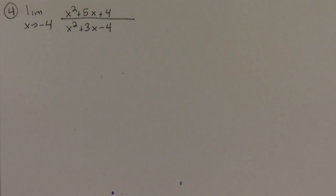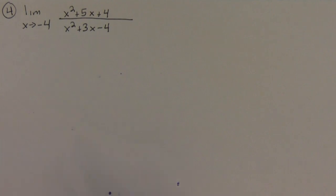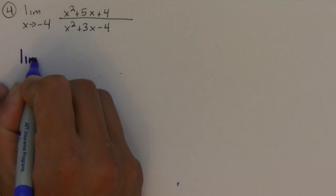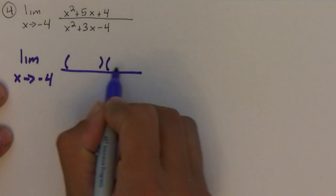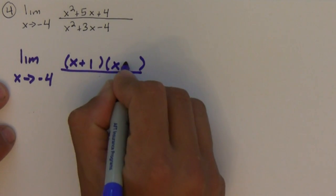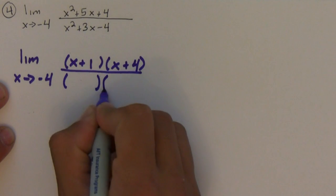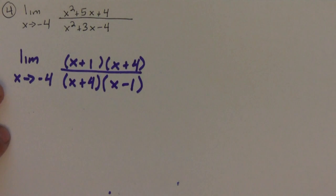In this problem we're going to find the limit as x approaches negative 4. The first thing we do is try plugging in the value, but it's easier if everything's factored first. So the numerator factors into x plus 1 and x plus 4, and the denominator factors into x plus 4 and x minus 1.